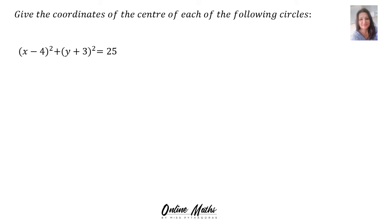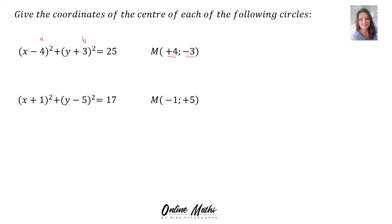I also want to show you: give the coordinates of the center of each of the following circles. For x minus 4 squared plus y plus 3 squared equals 25, the midpoint is (4, -3). For x plus 1 squared plus y minus 5 squared equals 17, the coordinates for the midpoint are (-1, 5) — a and b take the opposite sign. For x squared plus y minus 2 squared equals 10, there is nothing on the x term, so a's value is 0 and b's value is 2.